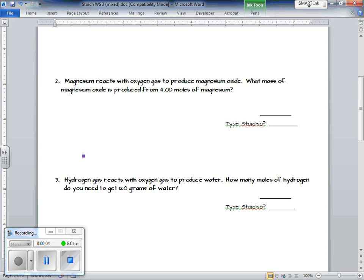This is stoichiometry worksheet number three. We're going to take a look at problem number two, which reads: magnesium reacts with oxygen gas to produce magnesium oxide. Before I look at my stoichiometry problem, I need to write out and balance my equation.